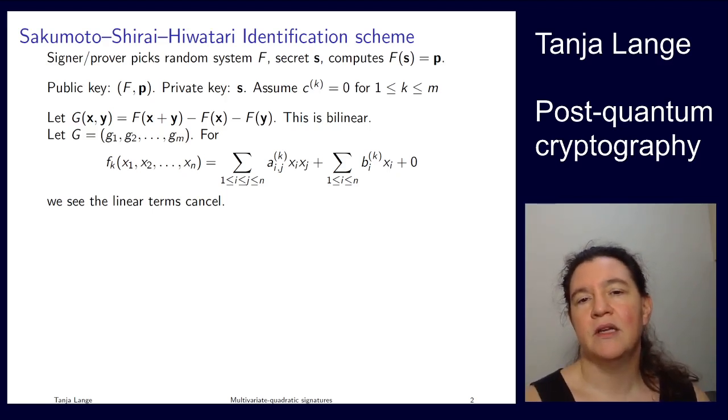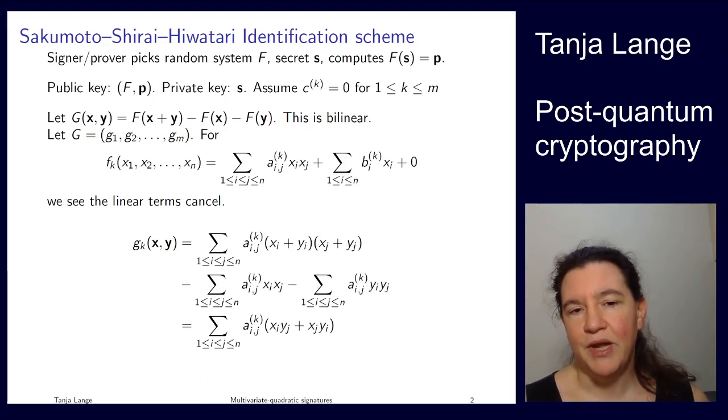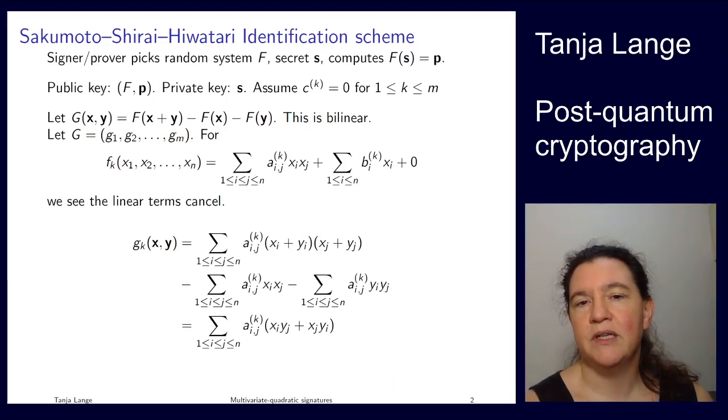So the interesting part is from the a terms here. So let's see what happens with these a terms. Here we have the k-th equation, yet now in x and y. The first part here has x_i which is now x_i plus y_i, and the j is also the sum. And then we're subtracting the evaluation at x and the evaluation at y. These are just like up here.